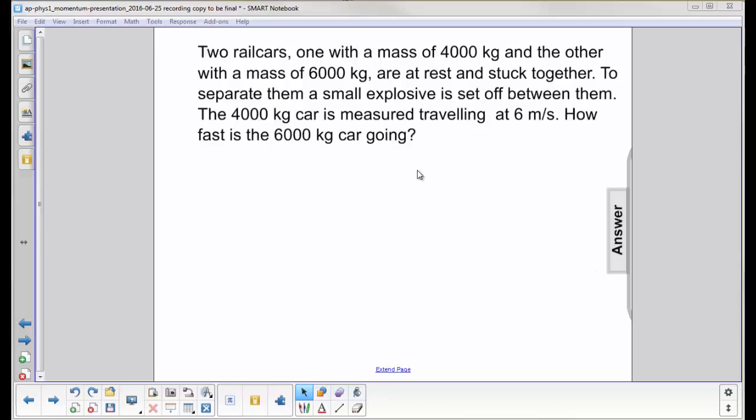Two rail cars, one with a mass of 4,000 kilograms - we'll draw him over here and call him B - and the other with a mass of 6,000 kilograms. Both are at rest.